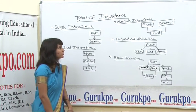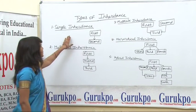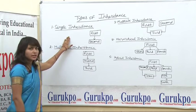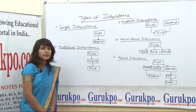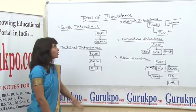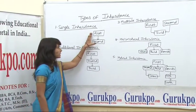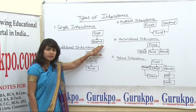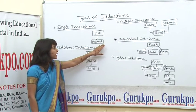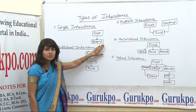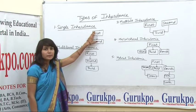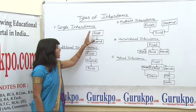First, we will discuss single inheritance. In single inheritance there is only one base class and one derived class. This derived class is also called a subclass of the base class.